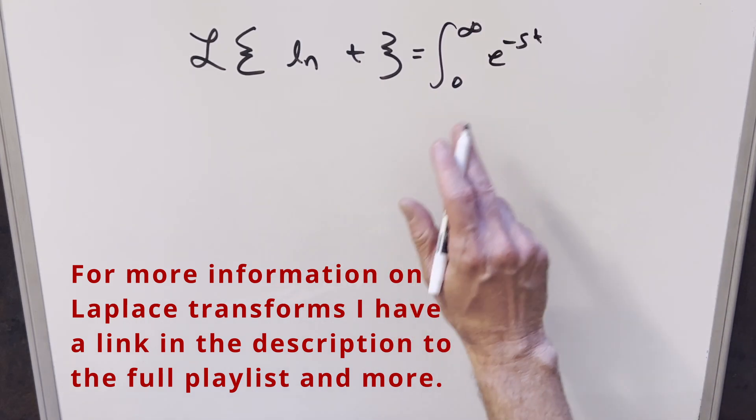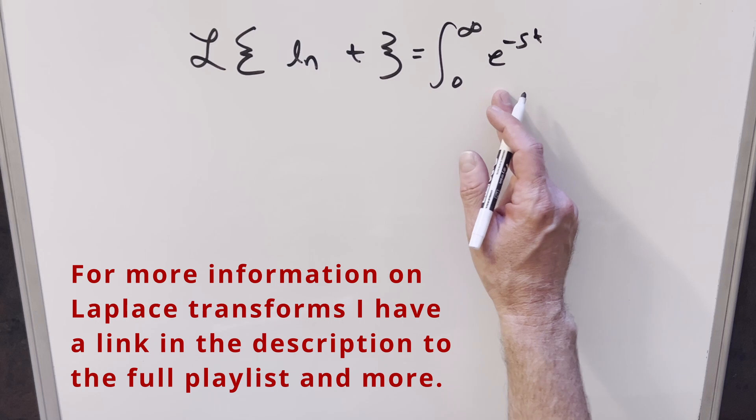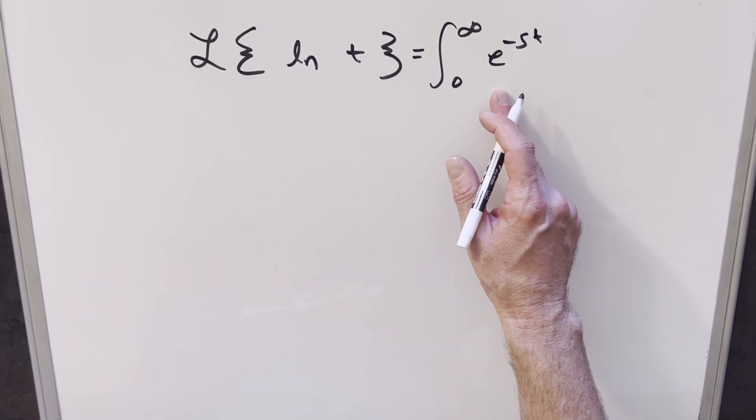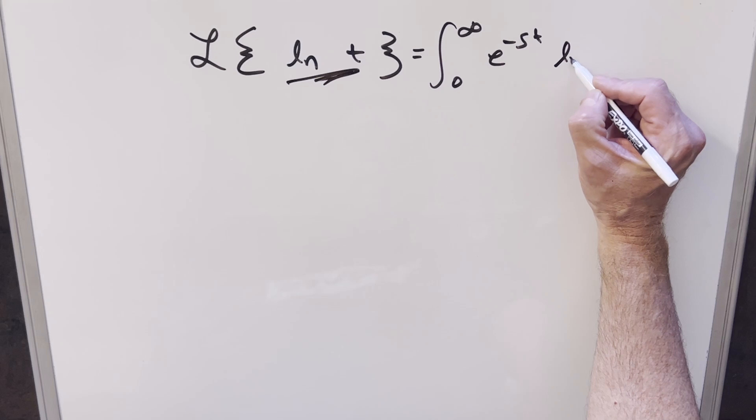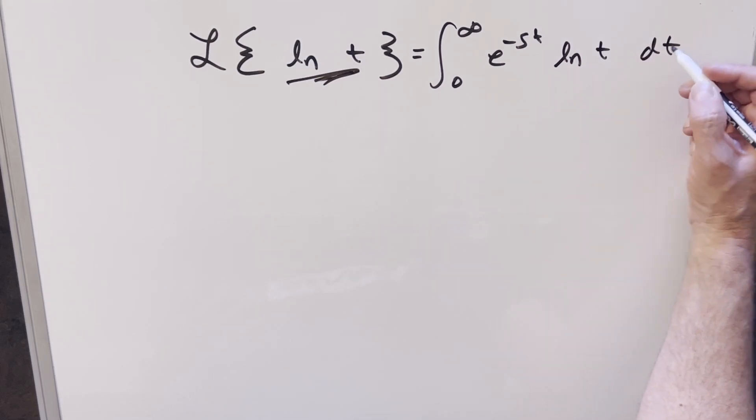So we have that Laplace transform is going to be just the integral from zero to infinity, e to the minus st times f of t, where it's just going to be this thing. So in our case, this is going to be natural log of t, dt.